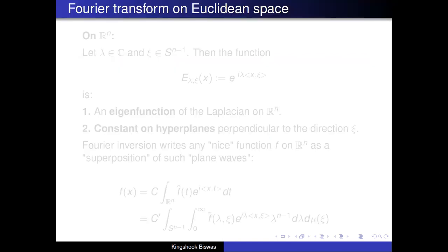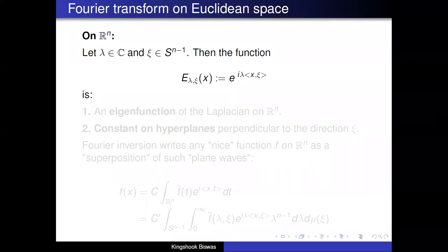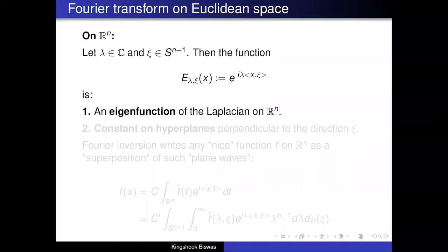Let me start by recalling the Fourier transform in Rⁿ, on Euclidean space, which most people should be familiar with. I want to think about it in a slightly different way. Let λ be any complex number and ξ a unit vector in Rⁿ, so a point in the (n−1)-sphere Sⁿ⁻¹. Then I can construct a function e_{λ,ξ}(x) = e^{iλ⟨x,ξ⟩}.